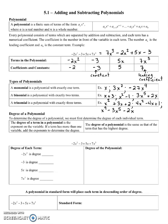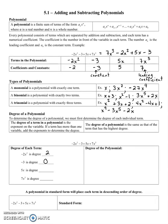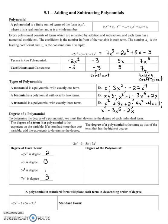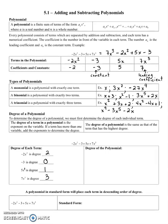Going back to negative 2x squared minus 3 plus 5x plus 7x cubed: negative 2x squared is degree 2, negative 3 is degree 0 because it has no variable, 5x is degree 1 because of the invisible exponent of 1, and 7x cubed is degree 3. The highest degree term is 3, so the degree of the polynomial is 3.